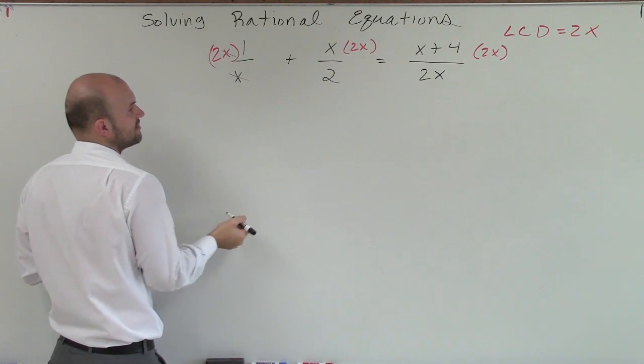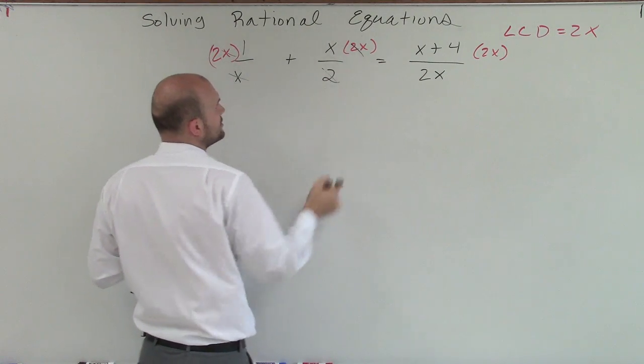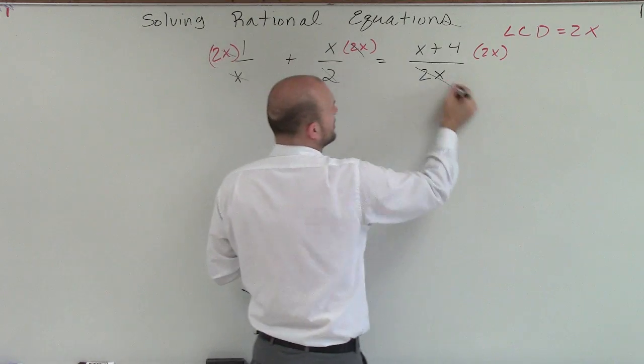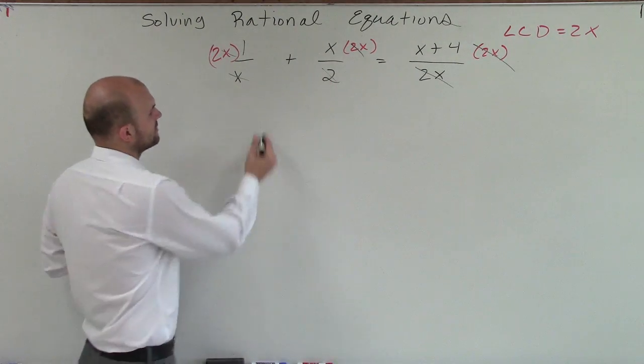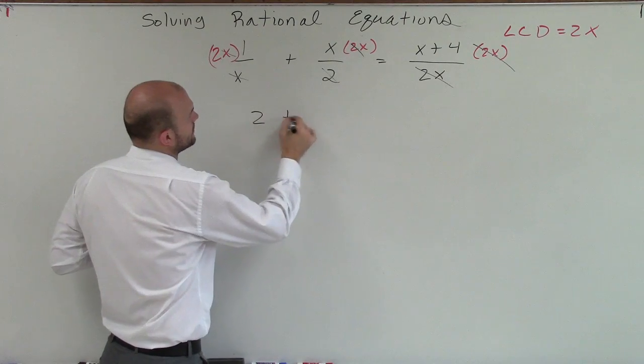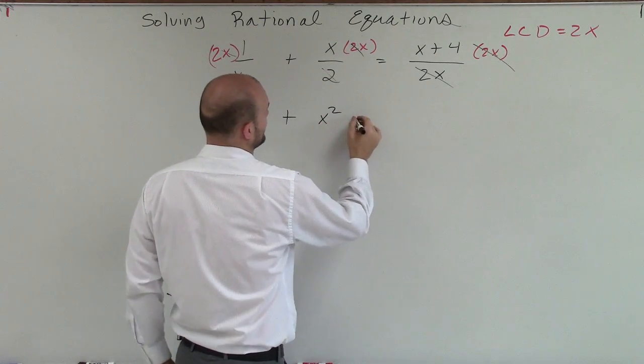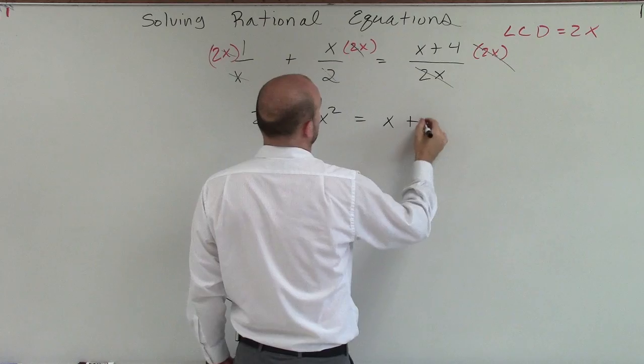Here, my x divide out to 1. Here, my 2's divide out to 1. And here, my 2x divides into the 2x, so it divides out. Therefore, leave me with an equation of 2 plus x squared equals x plus 4.